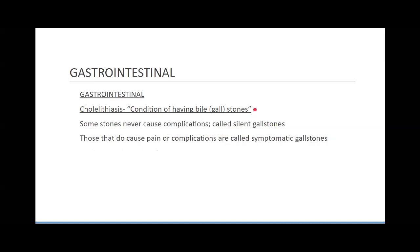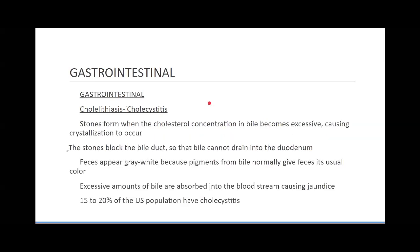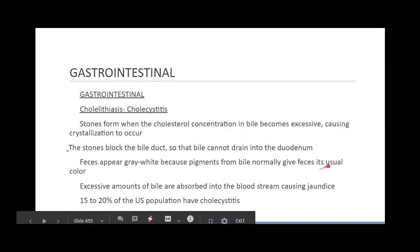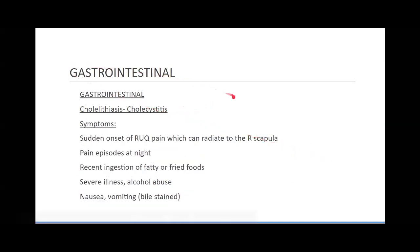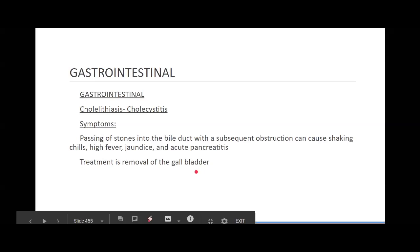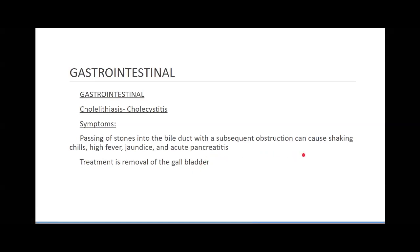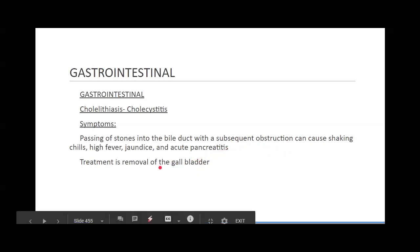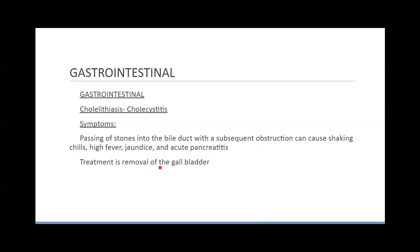Gallstones happen when bile becomes too concentrated, and when we try to release those gallstones they get stuck in the passageways — similar to a kidney stone. This can change the color of your poop to white or chalky gray-white, because pigments from bile normally give feces its color. We'll notice this with right upper quadrant pain, which can radiate to the right scapula — called referred pain. After eating fatty or fried foods, nausea and vomiting will be bile-stained. Passing stones in the bile duct can cause shaking chills, high fever, jaundice, and acute pancreatitis.